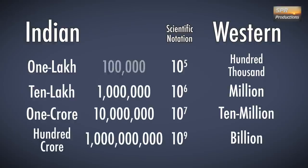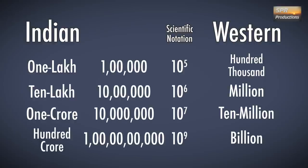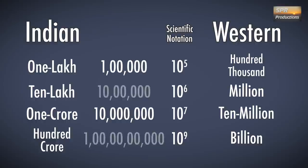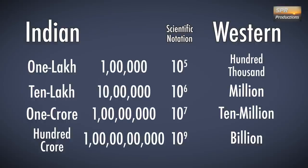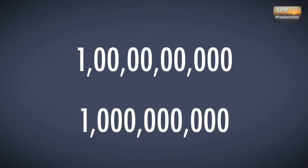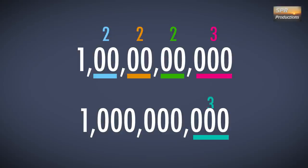10 million is referred to as 1 crore. And lastly, 100 crores is the same as 1 billion. As you can see, even the placement of commas differs between the two systems. The Indian system places the first comma after 3 digits, then 2, 2, 2, and so on, while the Western system uses batches of 3 digits.